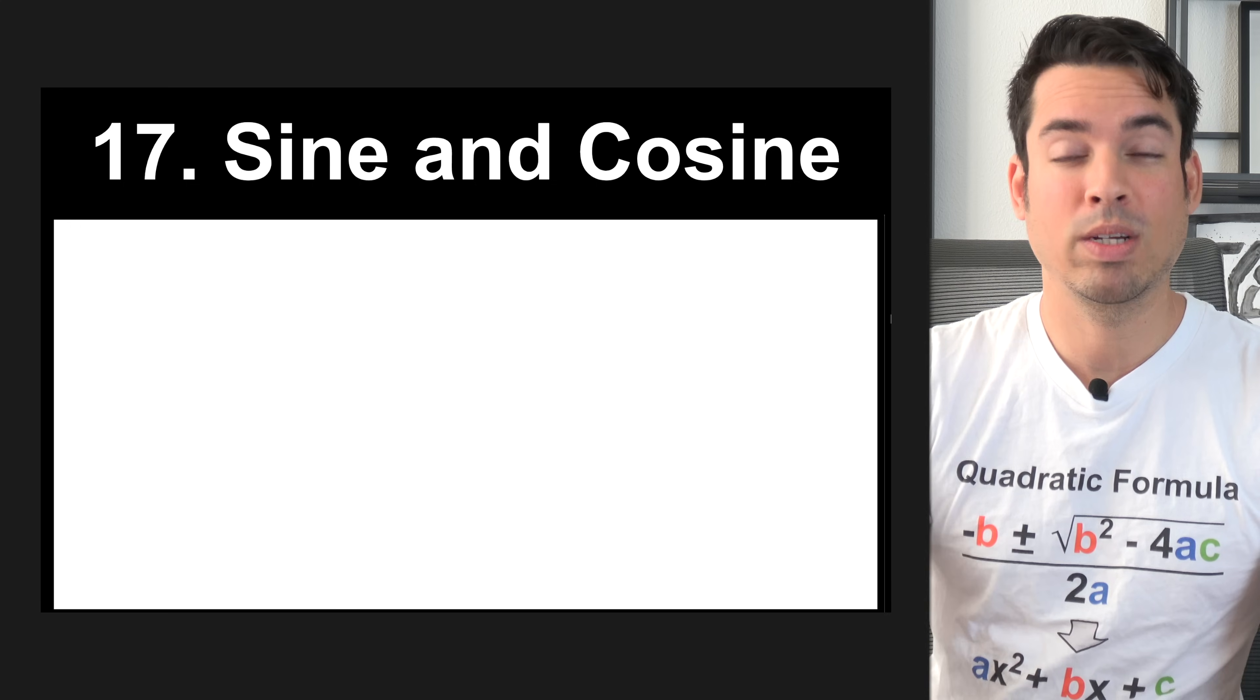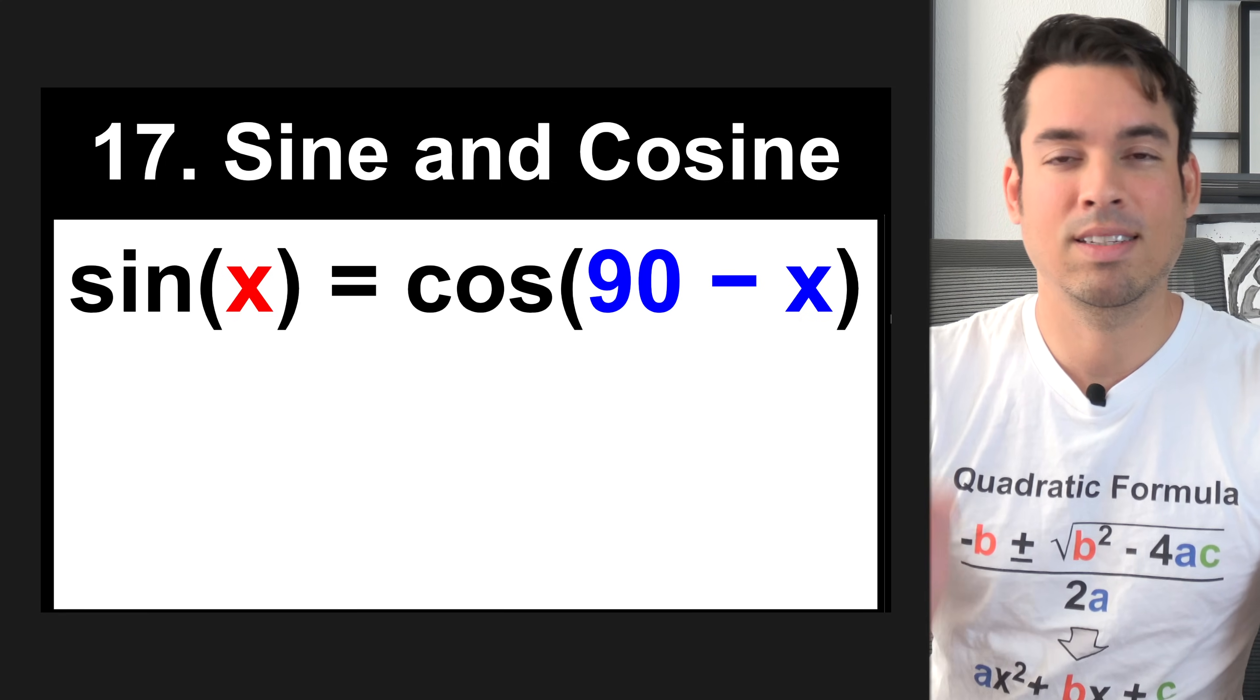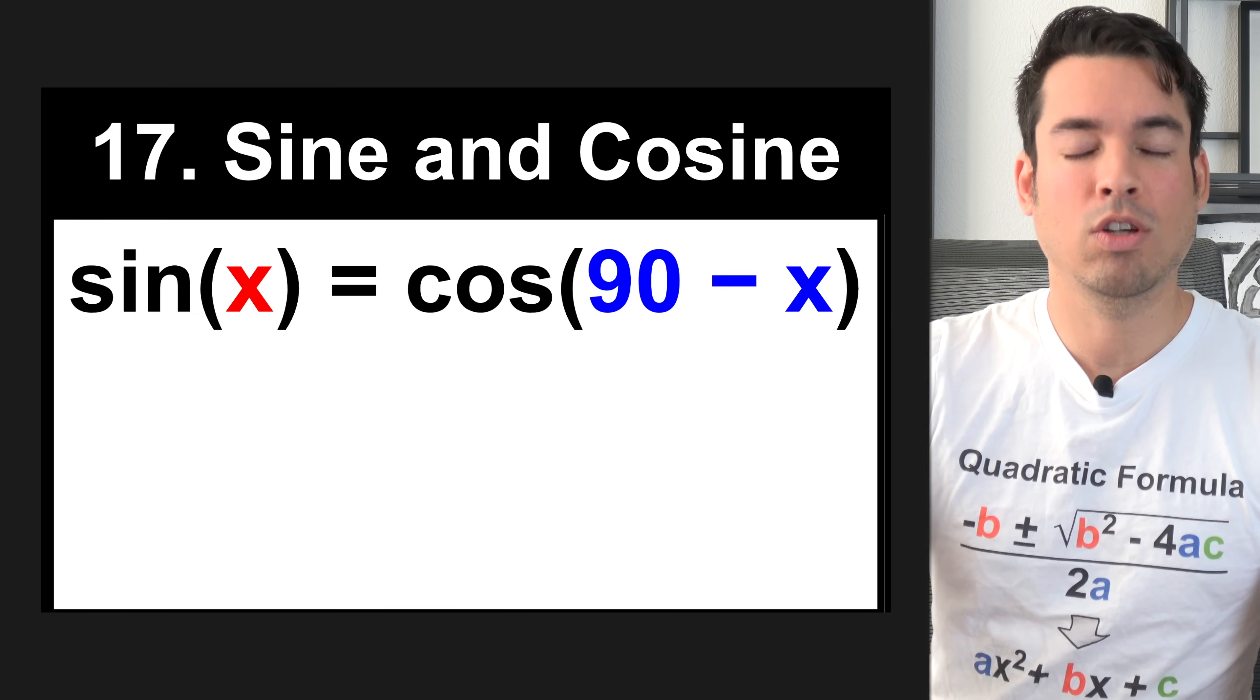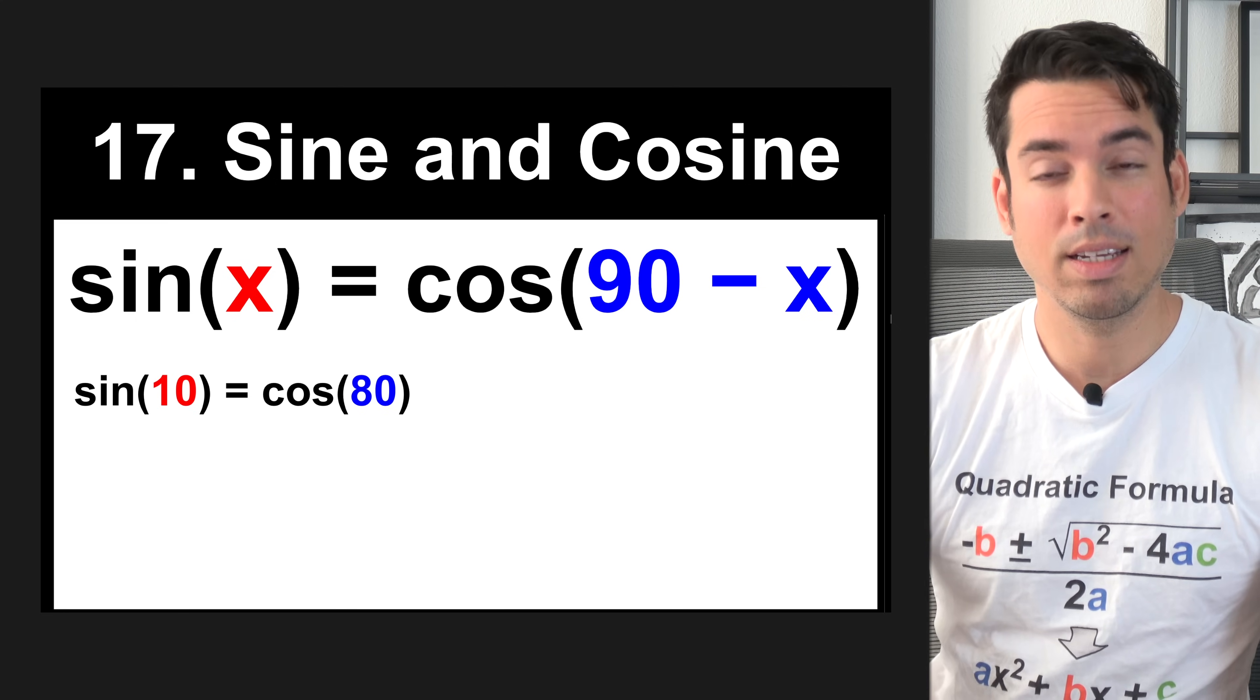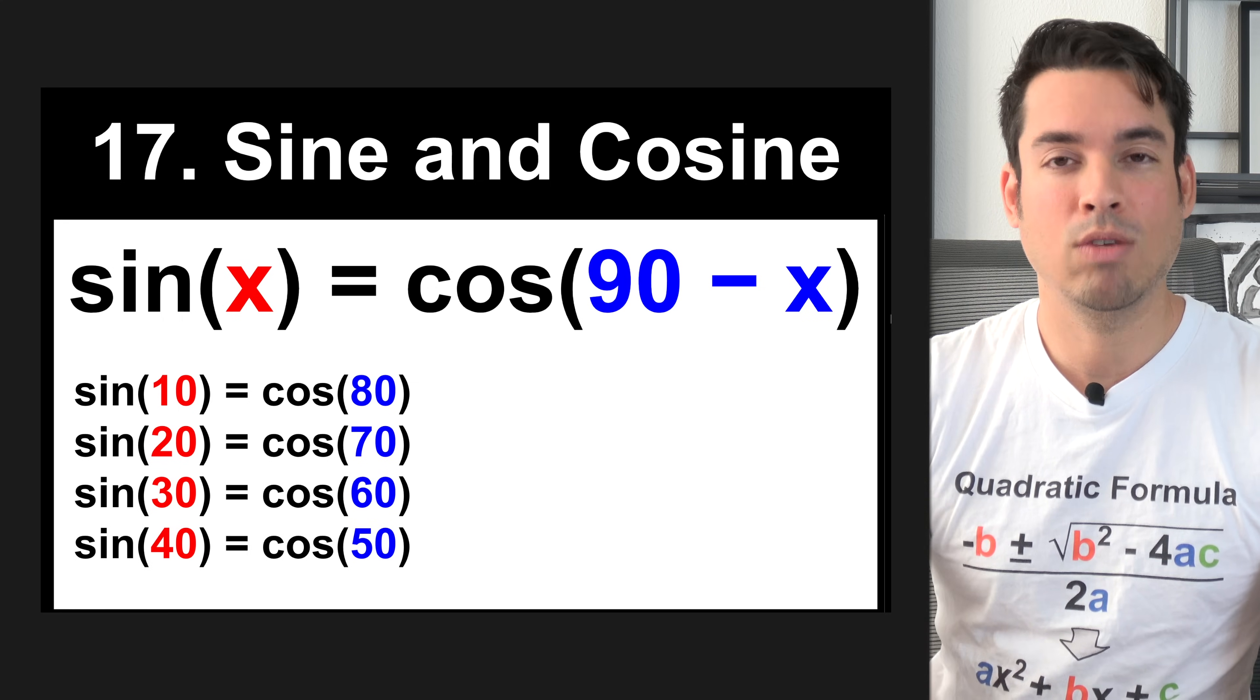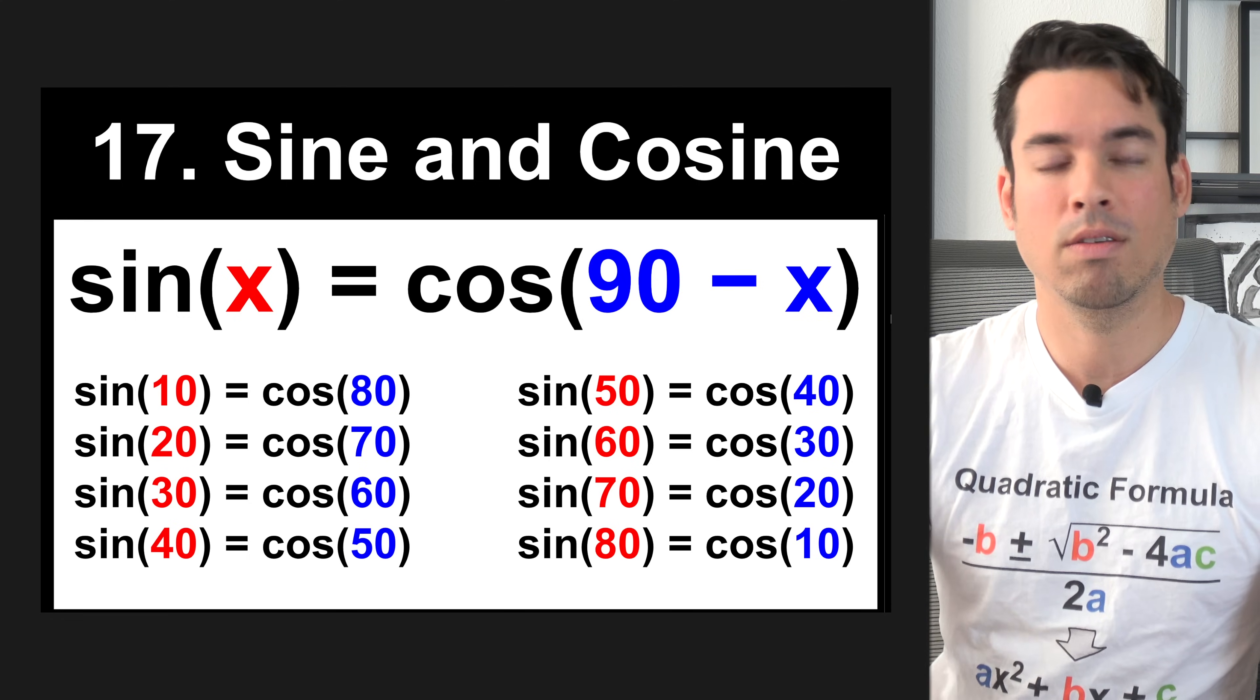Next, there is an important relationship between sine and cosine that you've got to know to help you with some of the more complex trigonometry problems. This formula is that sine of x equals cosine of 90 minus x. This is in degrees. What this is saying is that sine of an angle equals cosine of the complement of that angle. For example, sine of 10 would equal cosine of 80, sine of 20 would equal cosine of 70, sine of 30 cosine of 60, and sine of 40 would equal cosine of 50. Just remember, sine of an angle equals cosine of its complement.